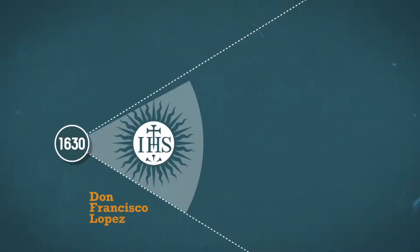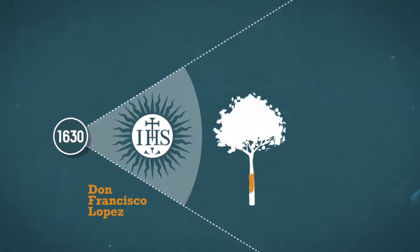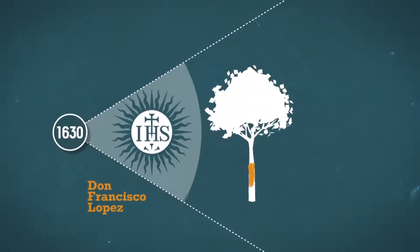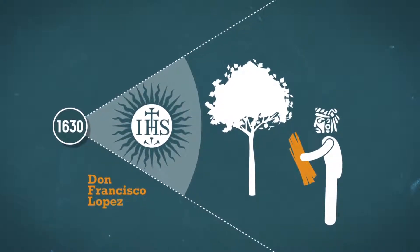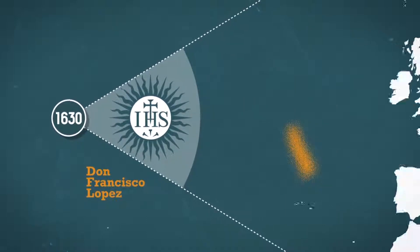In 1630, Spanish Jesuit Don Francisco Lopez discovered the curative properties of the bark of a Peruvian tree called cinchona, which the Indians were already using to treat fever. The precious Jesuit powder was brought to Europe.